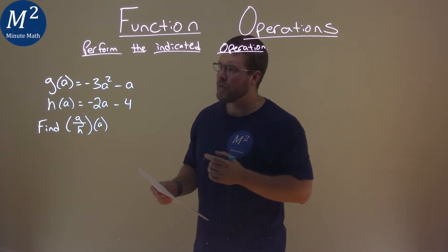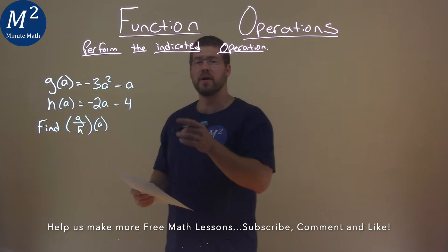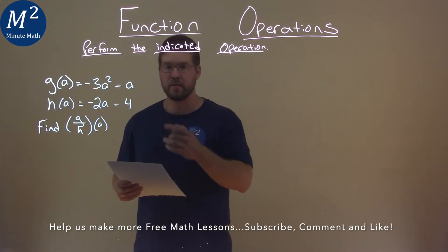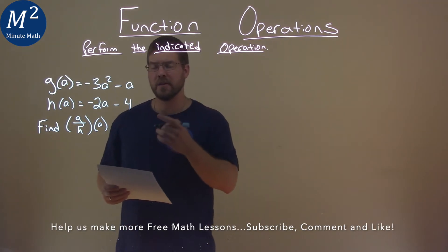We're given this problem right here. g of a is equal to negative 3a squared minus a, h of a is equal to negative 2a minus 4, and we need to find g over h of a.